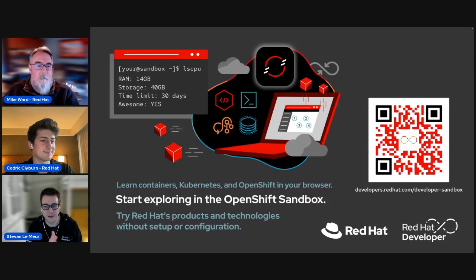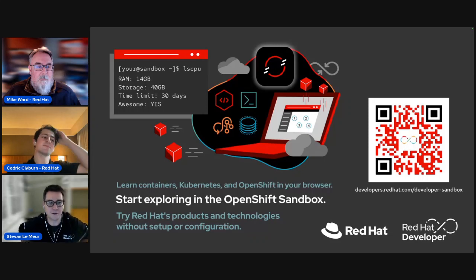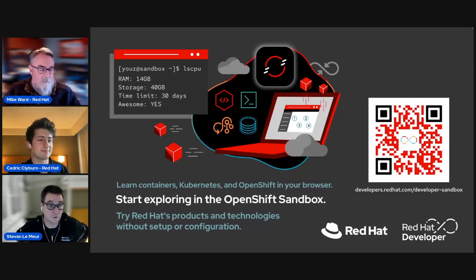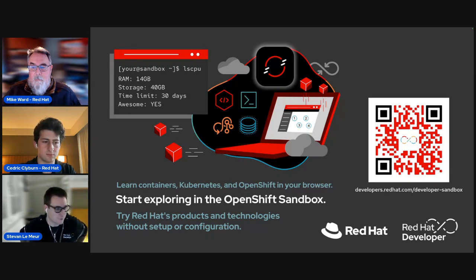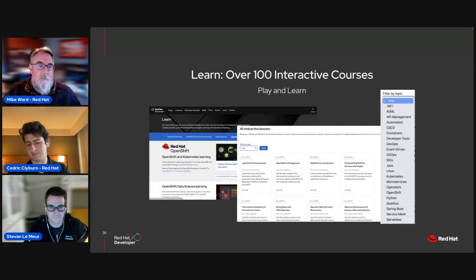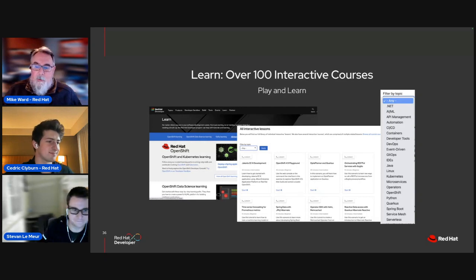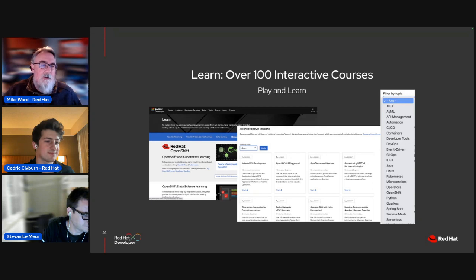The OpenShift developer sandbox, as we used during the demo, is available for free. You'll have a free account to try out OpenShift with 14 gigabytes of RAM and 40 gigabytes of storage, so you can really get deep into OpenShift and discover the technology. We're really right up against the end here — we're going to have to wrap up the transition. Any last words, Cedric or Stefan?